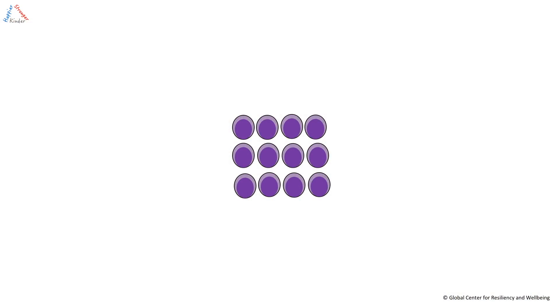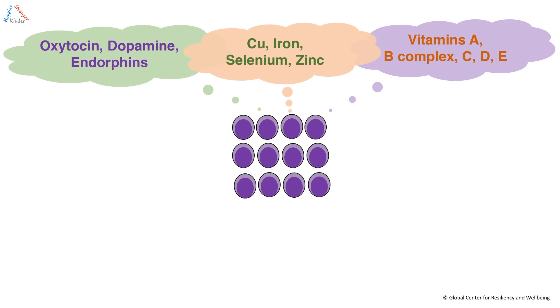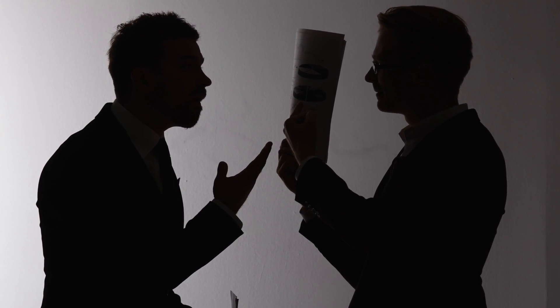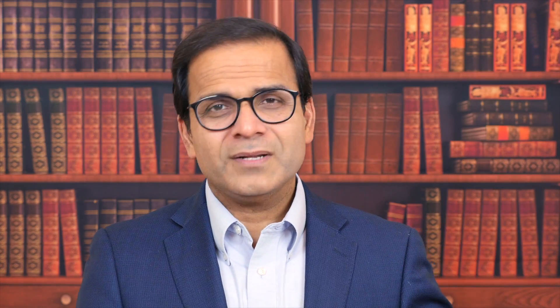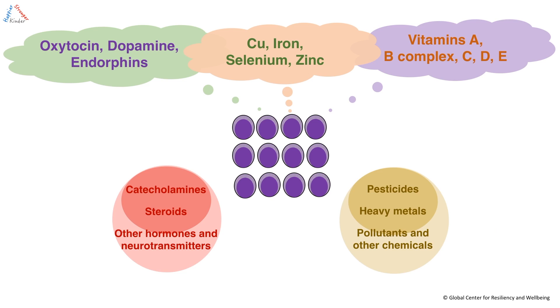What does your immune system need for resilience? Immune cells need the right kind of nutrition — all the vitamins: A, B complex, C, D, E — and all the minerals like copper, iron, selenium, zinc, and others. They also need healthy neurotransmitters and healthy hormones such as oxytocin, endorphins, and dopamine — things that make you feel good and happy. You want to avoid toxic hormones like excessive norepinephrine, adrenaline, excessive steroids, and other toxic neurotransmitters, as well as environmental toxins such as heavy metals and pesticides.